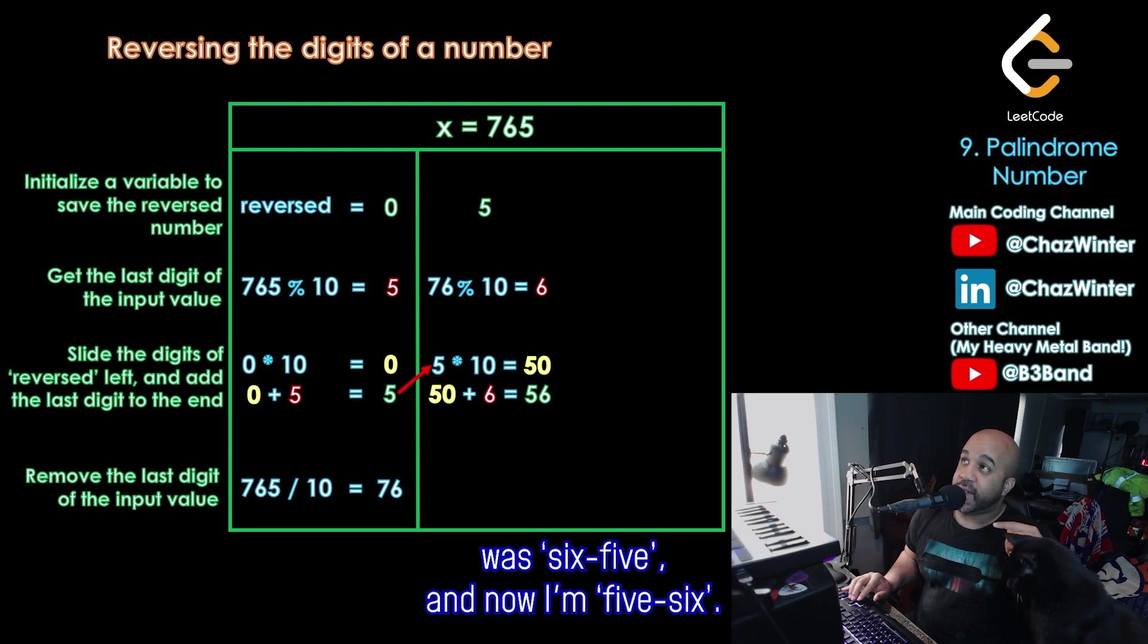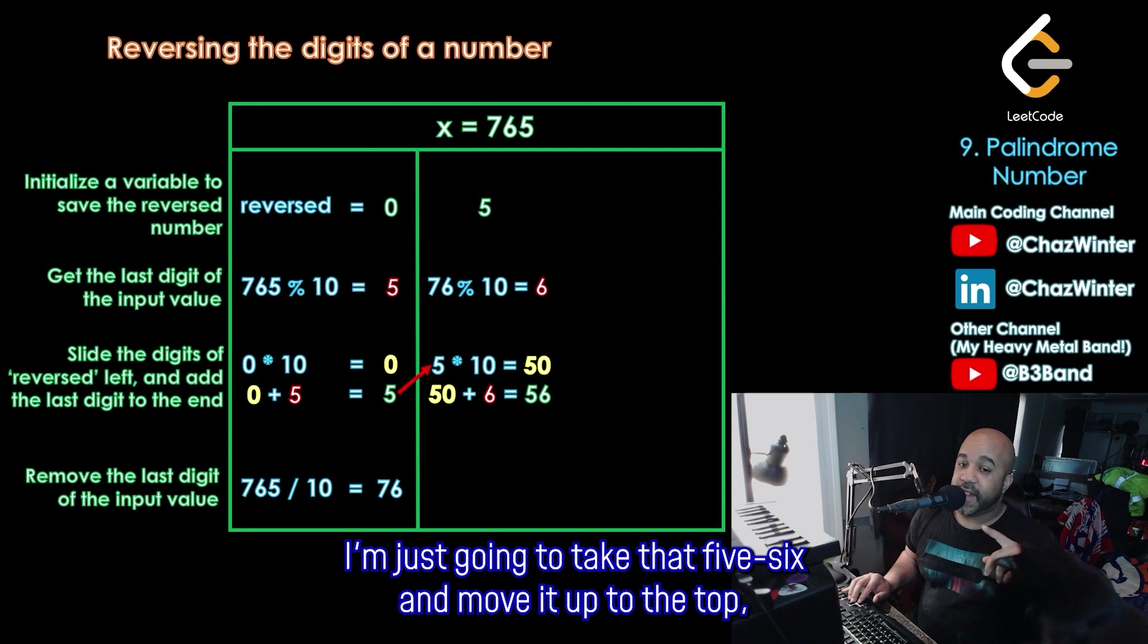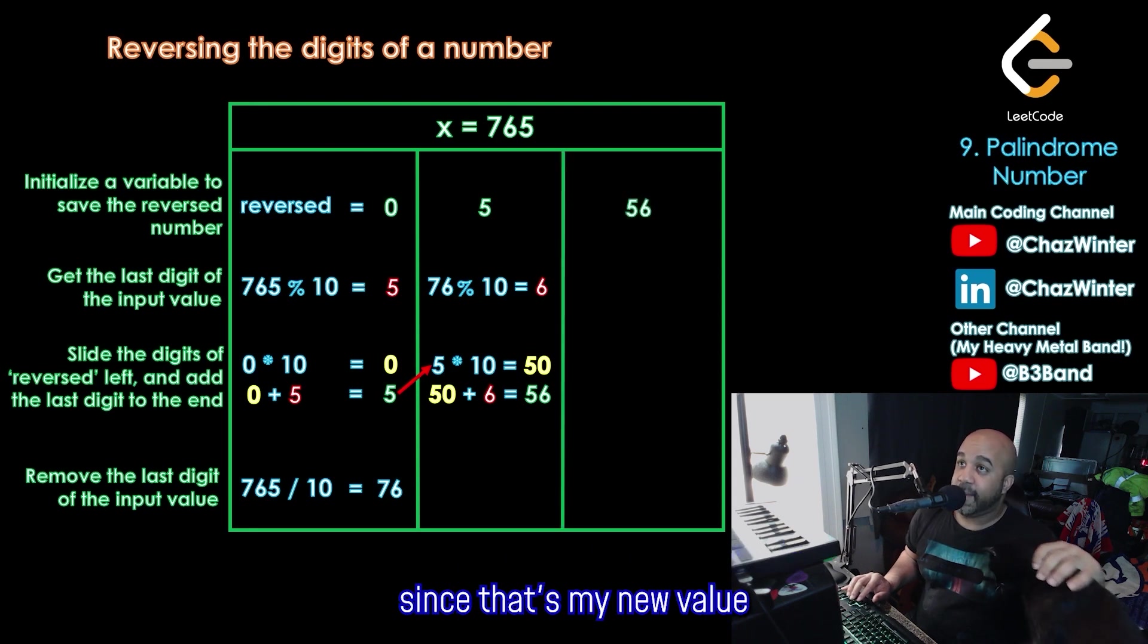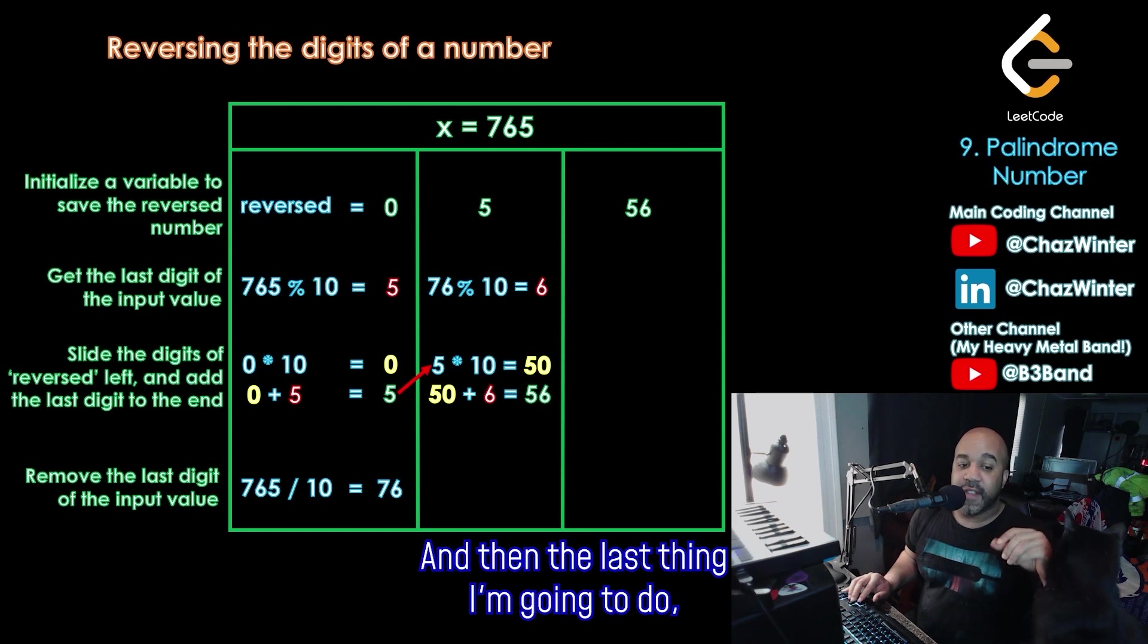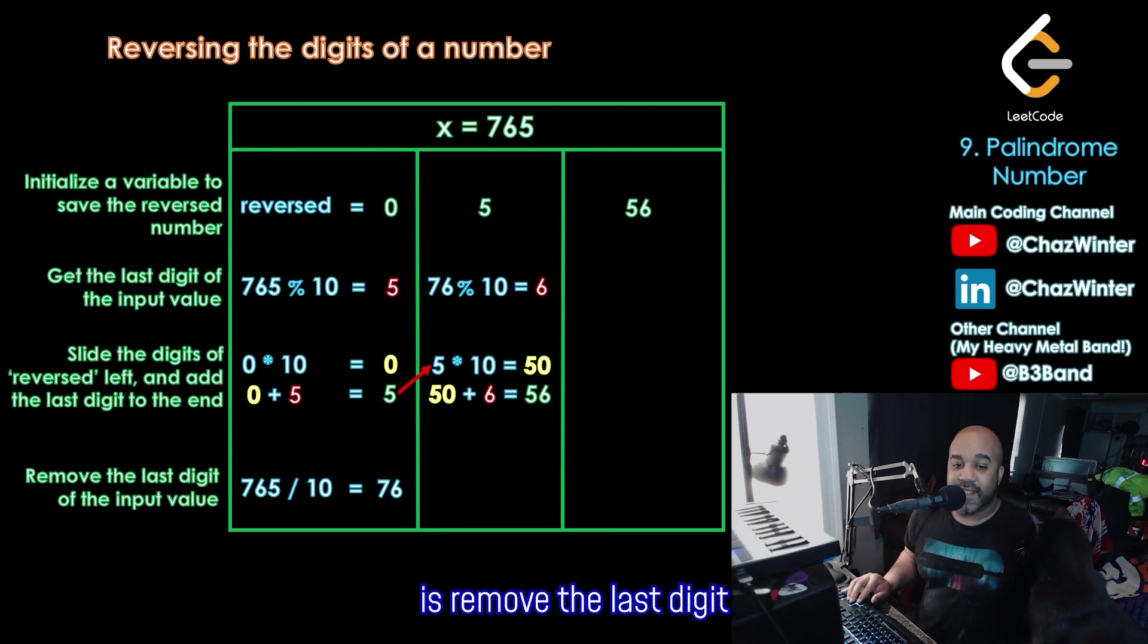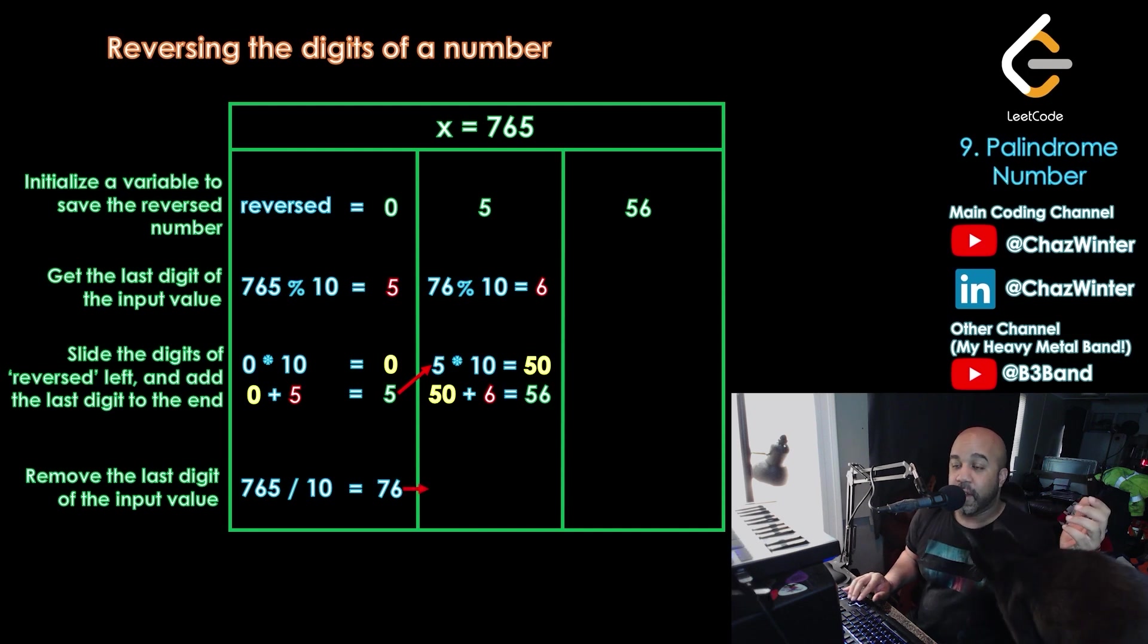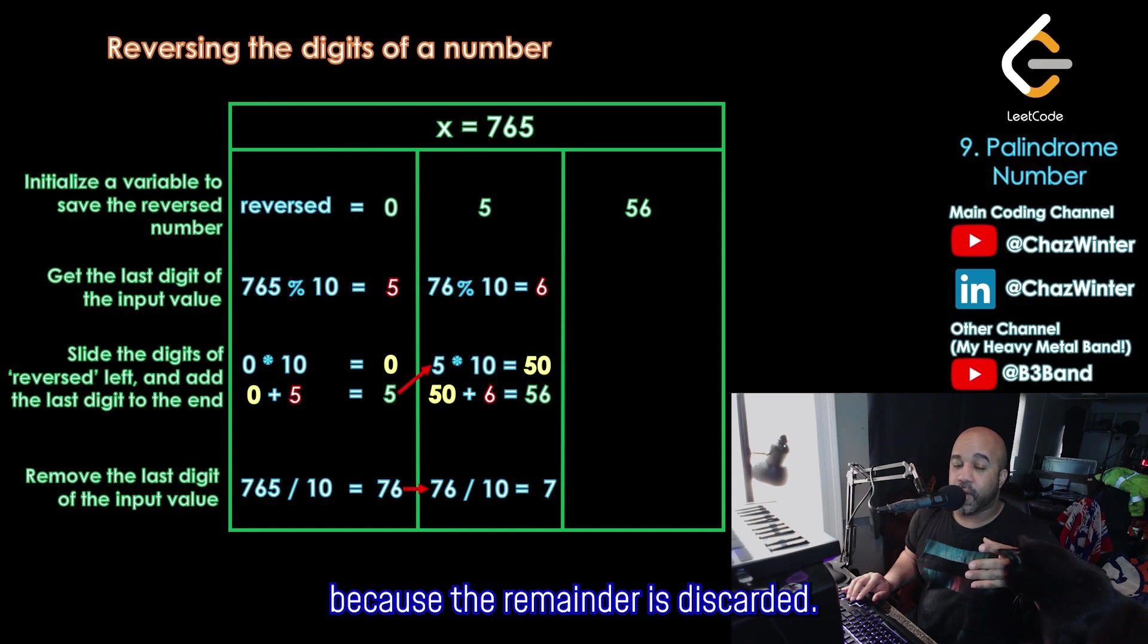Notice that the original number was 65. And now I'm 56. In order to stay organized, I'm just going to take that 56 and move it up to the top since that's my new value for reversed. And then the last thing I'm going to do is remove the last digit of my input value. My input value right now is 76. So I'll divide that by 10, leaving me with just 7 because the remainder is discarded.